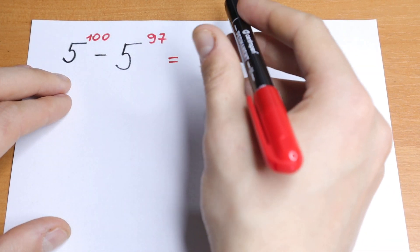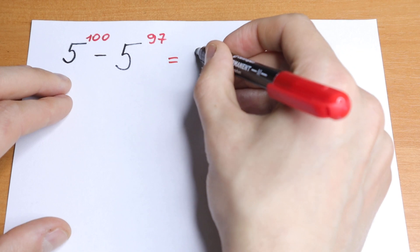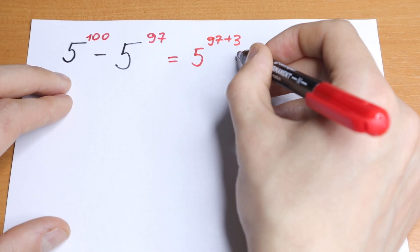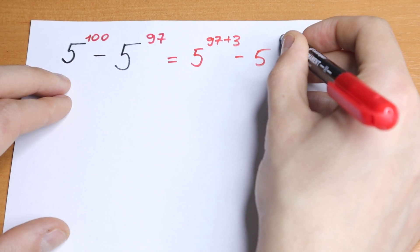Take a look. We can write 100 as 97 plus 3. So we will have 5 to the power 97 plus 3, and minus, of course, 5 to the power 97.